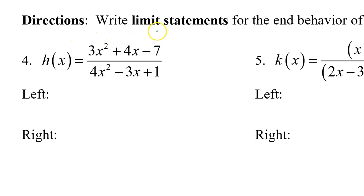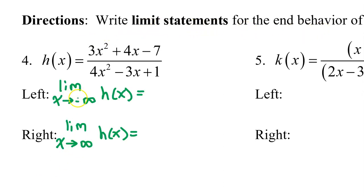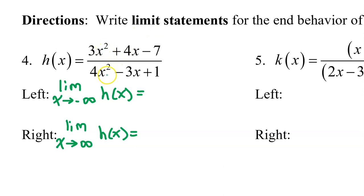For the next few problems, we will write limit statements for the end behavior. The left end behavior always starts: the limit as x approaches negative infinity of h of x. The right end behavior always starts: the limit as x approaches positive infinity of h of x. If there is a horizontal asymptote, that number will be the end behavior automatically. Whenever the degree of the numerator and denominator are equal, there is a horizontal asymptote equal to the ratio of the leading coefficients. So the horizontal asymptote is y equals three-fourths, and the end behavior is approaching three-fourths on the left and the right.